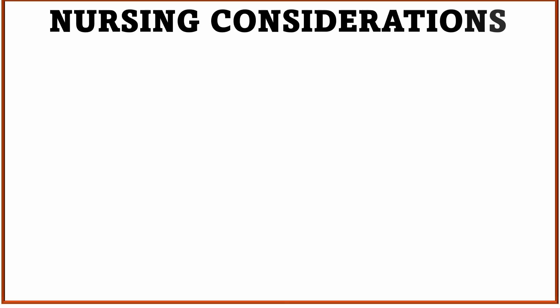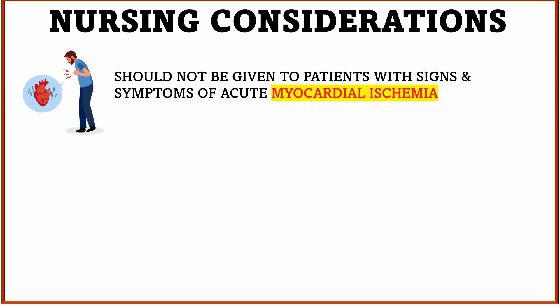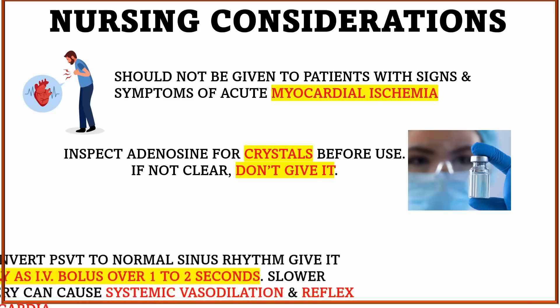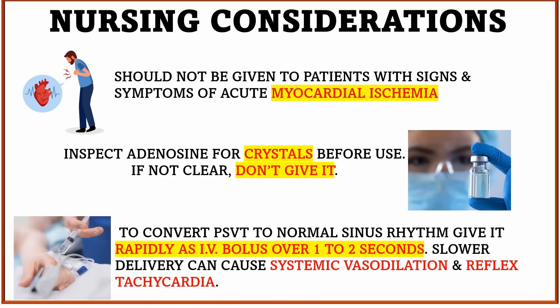Let us see the nursing considerations while handling this injection. First, this drug should not be given to patients with signs and symptoms of acute myocardial ischemia. Second, check for any crystals before use — if the injection is not clear, do not give it to the patient. Third, when used for treatment of PSVT, it should be rapidly given over 1-2 seconds, followed by a saline push to prevent systemic vasodilation and reflex tachycardia.